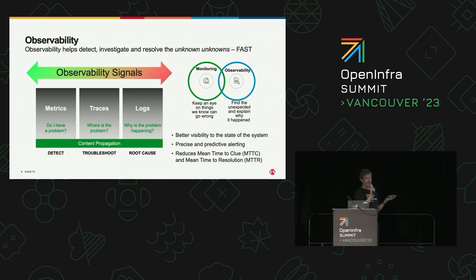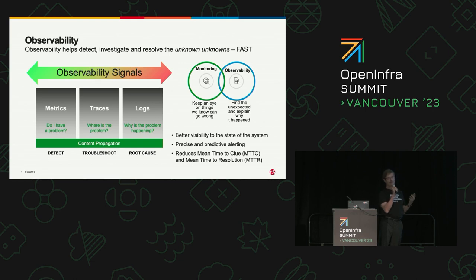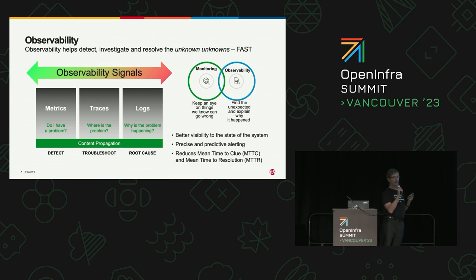Unknown unknowns — we can go back and figure out what's going on with those. That gives us visibility into the state of the system itself, lets us do predictive analysis, as well as reducing mean time to clue. Mean time to clue means you may get a faster mean time to response and resolution. Basically, tracing helps you get to mean time to clue.